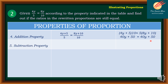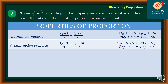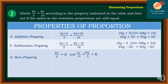The subtraction property gives 4y minus 5 all over 5, is it equal to 8y minus 10 all over 10? Using cross-products: 4y minus 5 times 10 is equal to 5 times 8y minus 10. This results in 40y minus 50 equals 40y minus 50, so it's still a proportion. Finally, for the sum property, 4y over 5 is the constant of proportionality, and 8y over 10 simplifies to 4y over 5 when dividing numerator and denominator by 2.